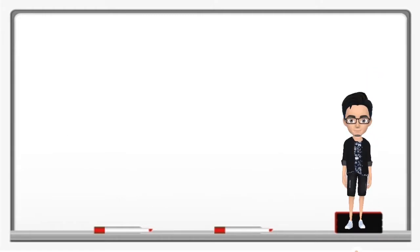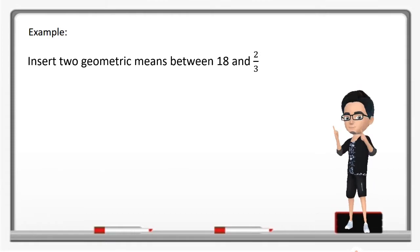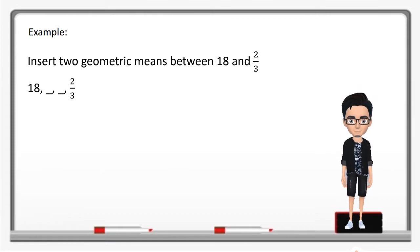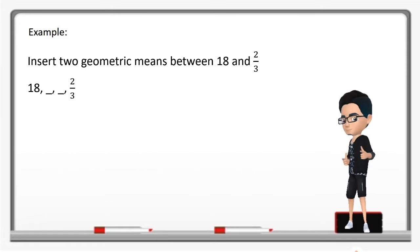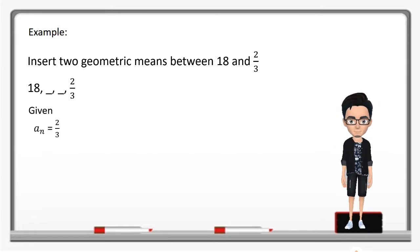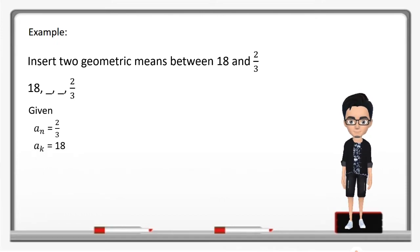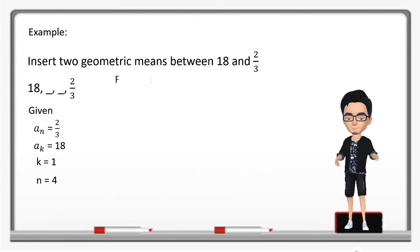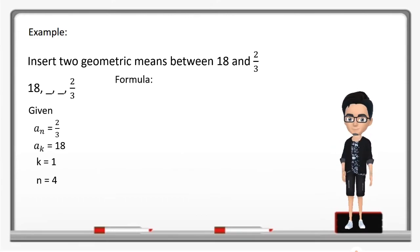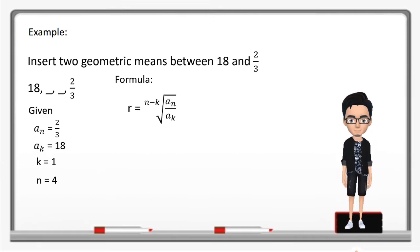Let's try another one. Insert 2 geometric means between 18 and 2/3. So we have: 18, _, _, 2/3. Our given values are: a sub n equal to 2/3, a sub k equal to 18, k equal to 1, and n equal to 4. So first, let us find the common ratio using the formula r equal to the (n minus k)-th radical of a sub n over a sub k.